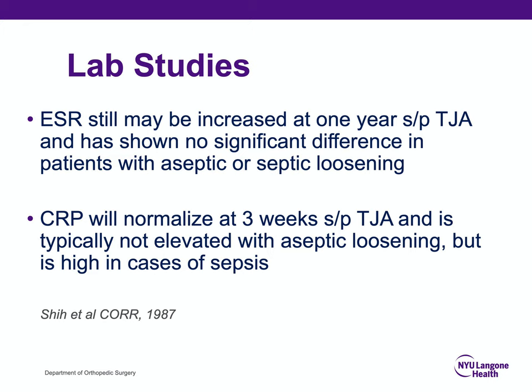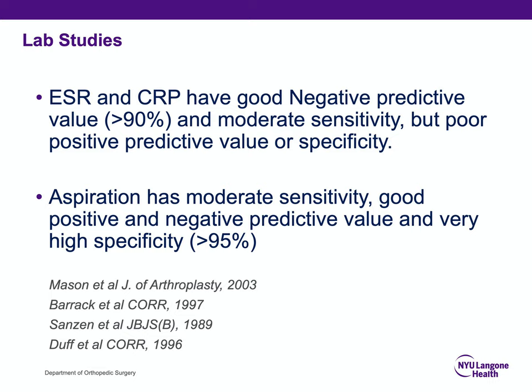ESR and CRP have good negative predictive value and moderate sensitivity, but their positive predictive value and specificity is not quite as good. Aspiration has moderate sensitivity and good positive and negative predictive value and is highly specific. On the boards, you will likely have to combine these pieces of information when deciding if this is a septic situation or not.